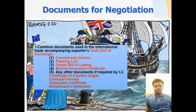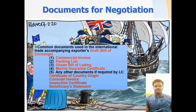Common documents used in international trade for negotiation include: the exporter's draft or bill of exchange, commercial invoice, packing list, ocean bill of lading, marine insurance certificate, and any other documents required by the LC such as a certificate of country of origin, consular invoice, inspection certificate, and beneficiary statement.